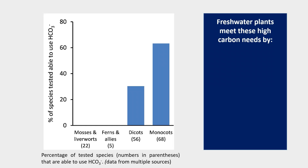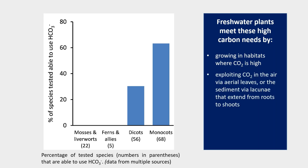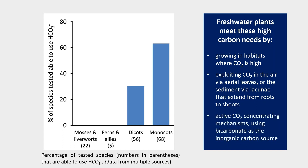Freshwater plants meet these high carbon needs by growing in habitats where carbon dioxide is high, exploiting carbon dioxide in the air via aerial leaves or the sediment via lacunae that extend from roots to shoots, as well as active carbon dioxide concentrating mechanisms using bicarbonate as the inorganic carbon source.